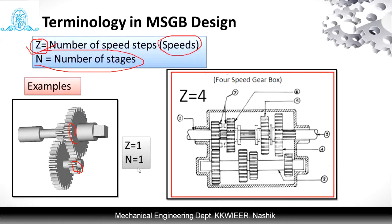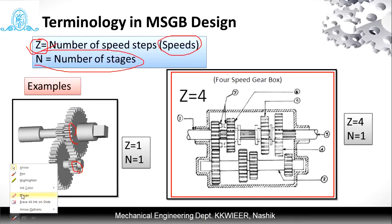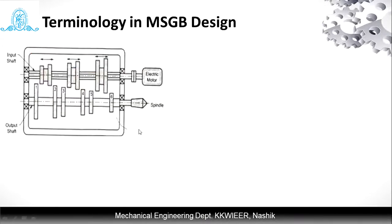For a gearbox with four speeds directly from two shafts: each respective gear contacts another — gears 1, 2, 3, and 4 — giving a four-speed gearbox. For a 6-speed single-stage gearbox: Z = 6 (six gears in combination) and N = 1 (two shafts, single stage). Comparing two types of gearboxes, the two-stage version increases compactness, converting a complicated geometry into a simpler compact design where the electric motor can be mounted on the input shaft.